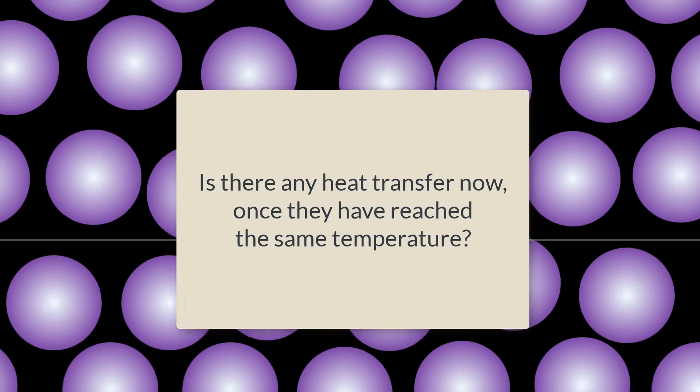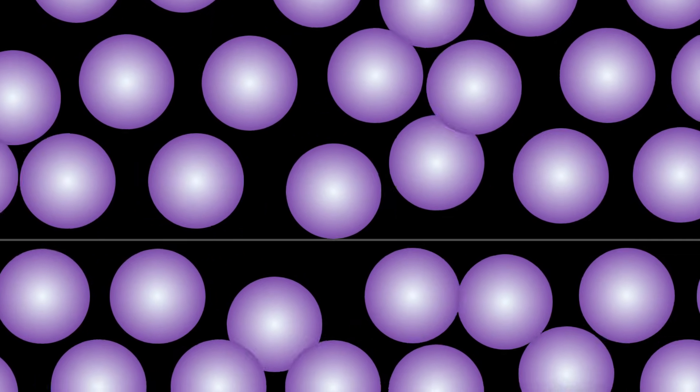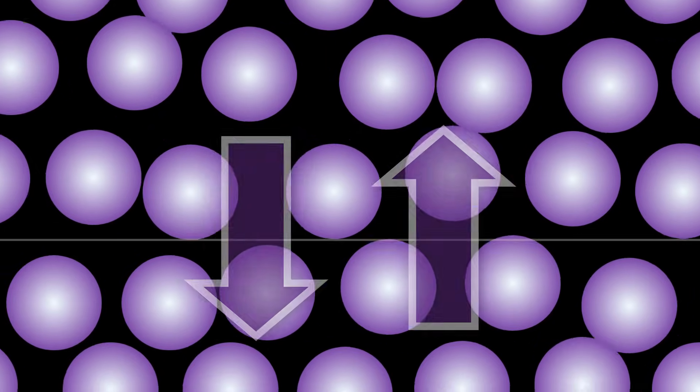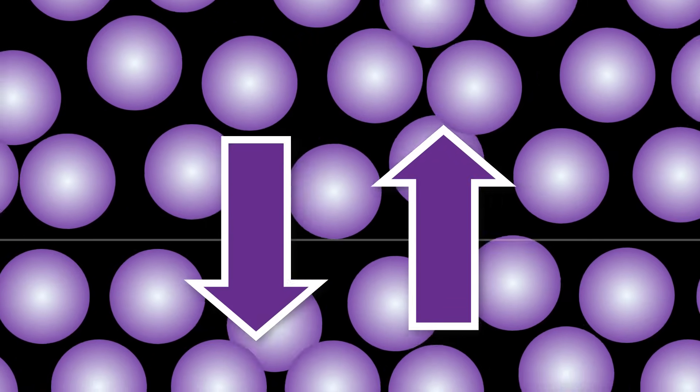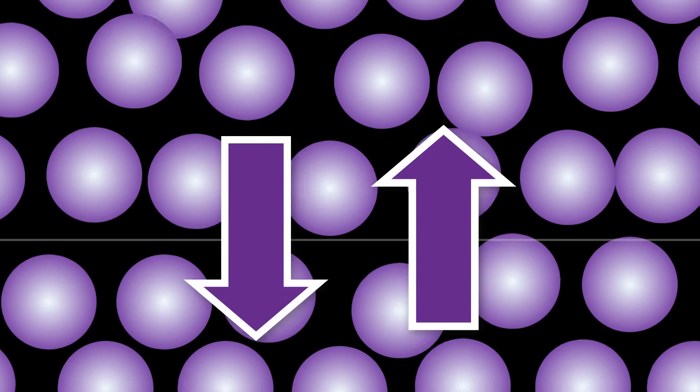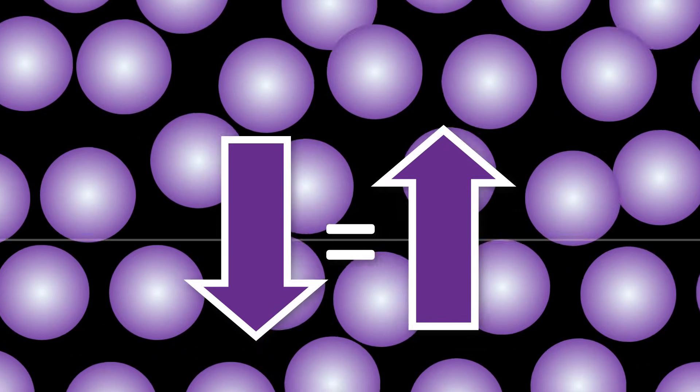Let's get back to a previous important question. Is there any heat transfer now once they have reached the same temperature? Think about it. The atoms are still constantly colliding and so are constantly transferring kinetic energy, but there is no net change in temperature. The two blocks have reached an equilibrium once they reach the same temperature. The amount of heat going from upper block to lower is equal to the amount of heat going from the lower block to the upper block. The rate of kinetic energy transfer between the blocks is now equal, which defines the equilibrium.